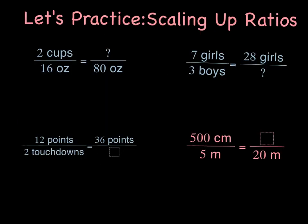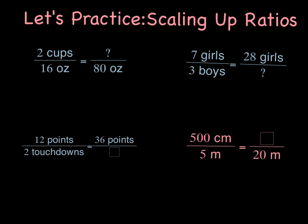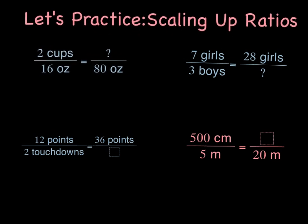Let's practice scaling up ratios. In this first problem, for every two cups we have sixteen ounces. Going from sixteen ounces to eighty ounces, I have to think what times sixteen would give me eighty. If you're not sure, you can always do eighty divided by sixteen, but I know that this is five. So I need to do the same thing to the cups - multiply by five - which gives me ten cups.